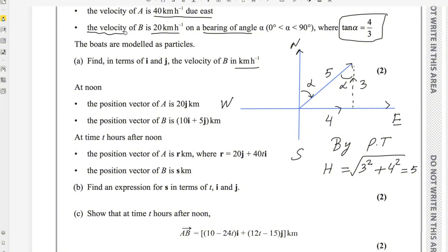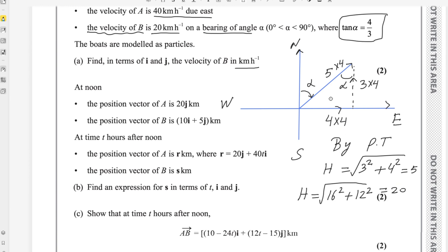Looking at the question, the velocity of vector B is 20 km/h, but our triangle gives a hypotenuse of 5. To scale from 5 to 20, we multiply by 4. You cannot multiply only the hypotenuse — you have to multiply the other components as well. So the new triangle has sides 16 and 12, and the hypotenuse becomes the square root of 16 squared plus 12 squared, which also gives 20.